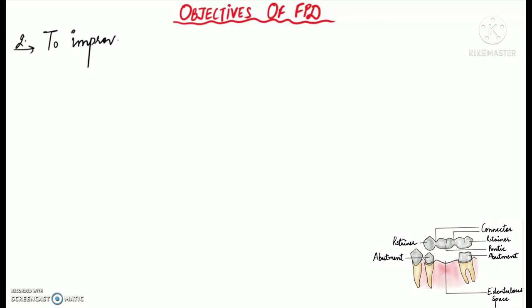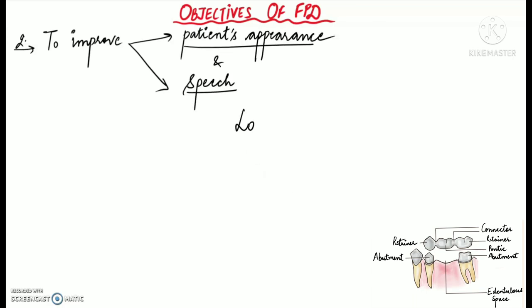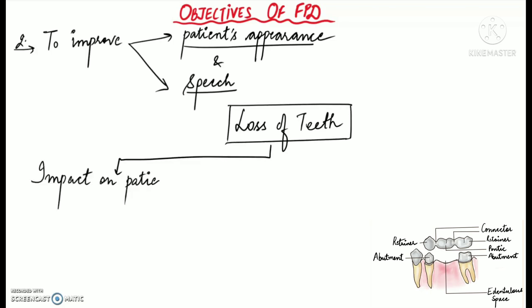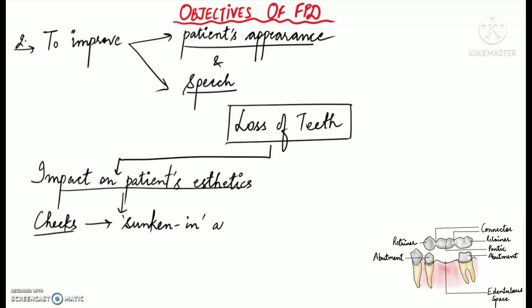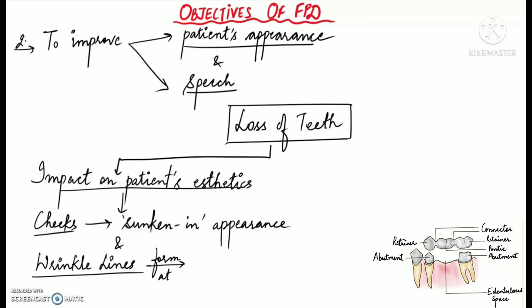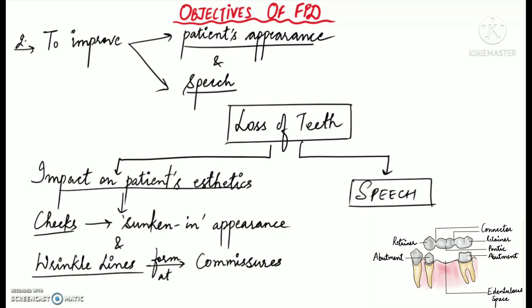The next objective of fixed partial dentures is to improve the patient's appearance and speech. Loss of teeth, especially in the anterior region, has a significant impact on patient aesthetics — it causes the cheek to exhibit a sunken-in appearance, and wrinkle lines are formed at the commissures or at the angle of the mouth. Fixed partial dentures help to improve appearance by replacing the missing teeth, particularly in the anterior region, by restoring proper lip support. Loss of teeth also significantly impacts speech, particularly where teeth are required for proper pronunciation of certain sounds or alphabets, and FPD helps to improve speech by replacing those missing teeth.